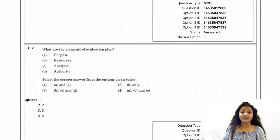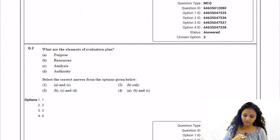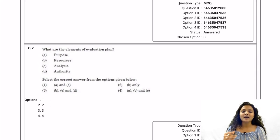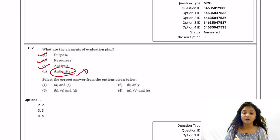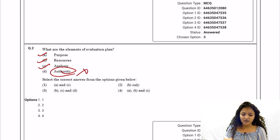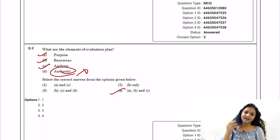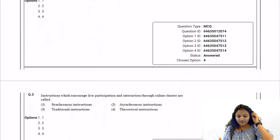Question 2: What are the elements of an evaluation plan? An evaluation plan is made by an organization to implement processes. For that we need purpose, resources, and analysis — but authority is not required to prepare the evaluation plan. So the correct option is option number four, which includes purpose, resources, and analysis.